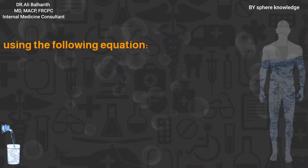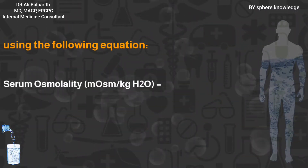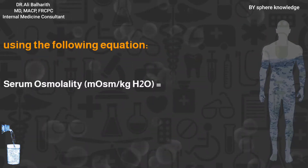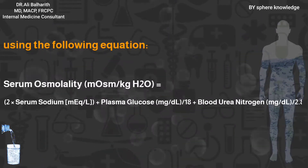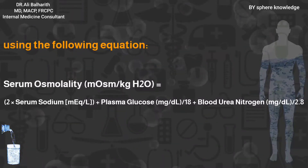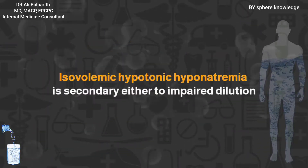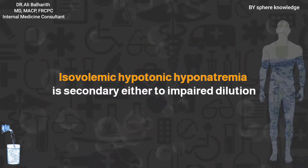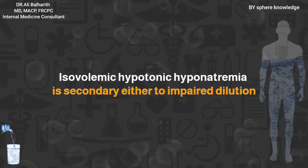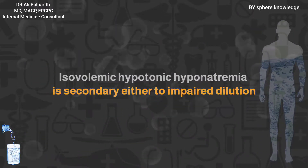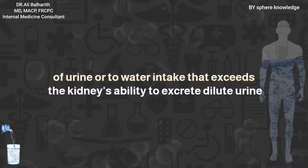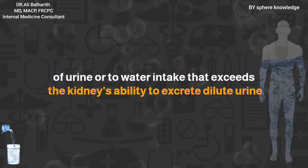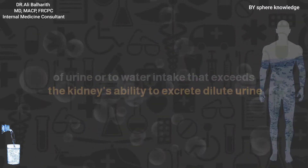Equation to calculate serum osmolarity: serum osmolarity equals 2 multiplied by serum sodium, plus plasma glucose in millimoles, plus blood urea nitrogen in millimoles. Isovolemic hypotonic hyponatremia is secondary either to impaired dilution of urine or to water intake that exceeds the kidney's ability to excrete dilute urine.